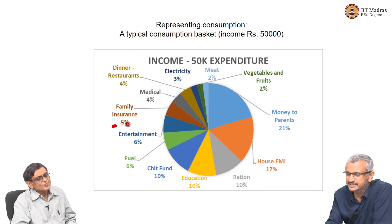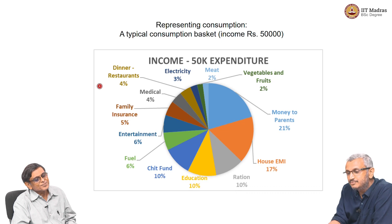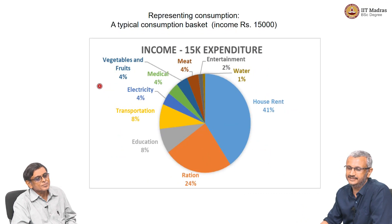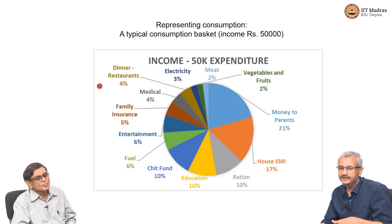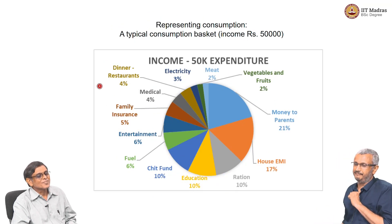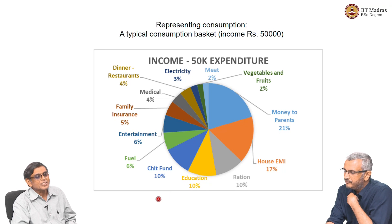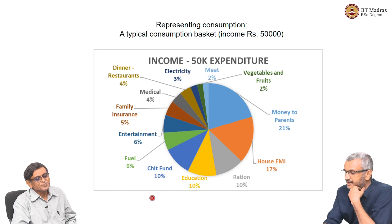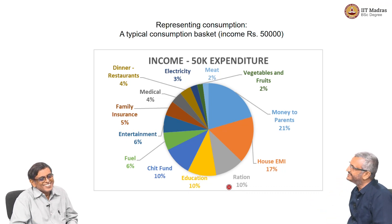Entertainment is there, insurance is there, and very interestingly, there is spending on going out for dinner. The consumer's behavior has changed drastically — in the earlier household, expenditure on meat and fruits was 3 to 4%, whereas here dinner in restaurants itself is very high. Electricity is also higher. Education is slightly less as a percentage, but in absolute numbers at 50,000 rupees this will be very high. Rations are only 10%, because you simply cannot keep eating proportionally more as income rises — you reach a point of saturation.